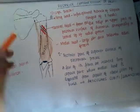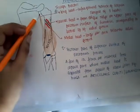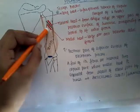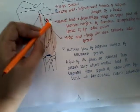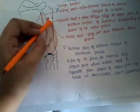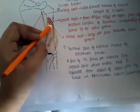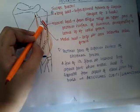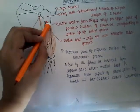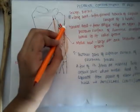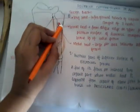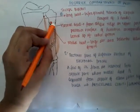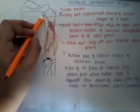The three heads are: the long head, the medial head, and the lateral head. The medial head is called medial because it is medial to the spiral groove. The lateral head is named lateral because it is lateral to the spiral groove, that is the radial groove.